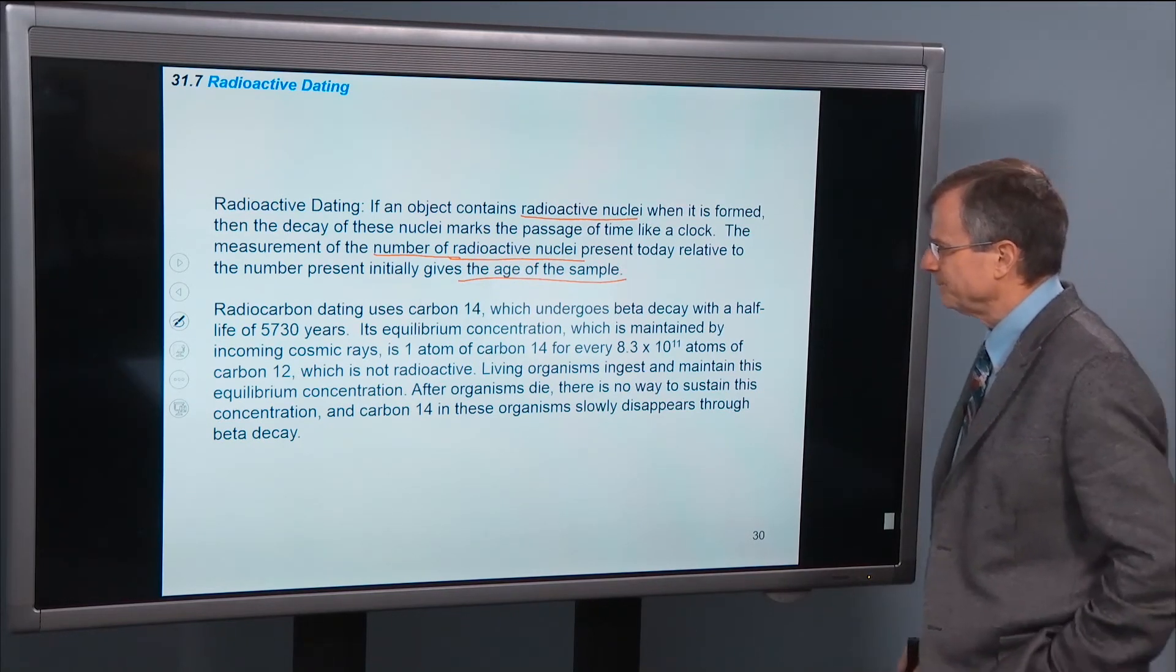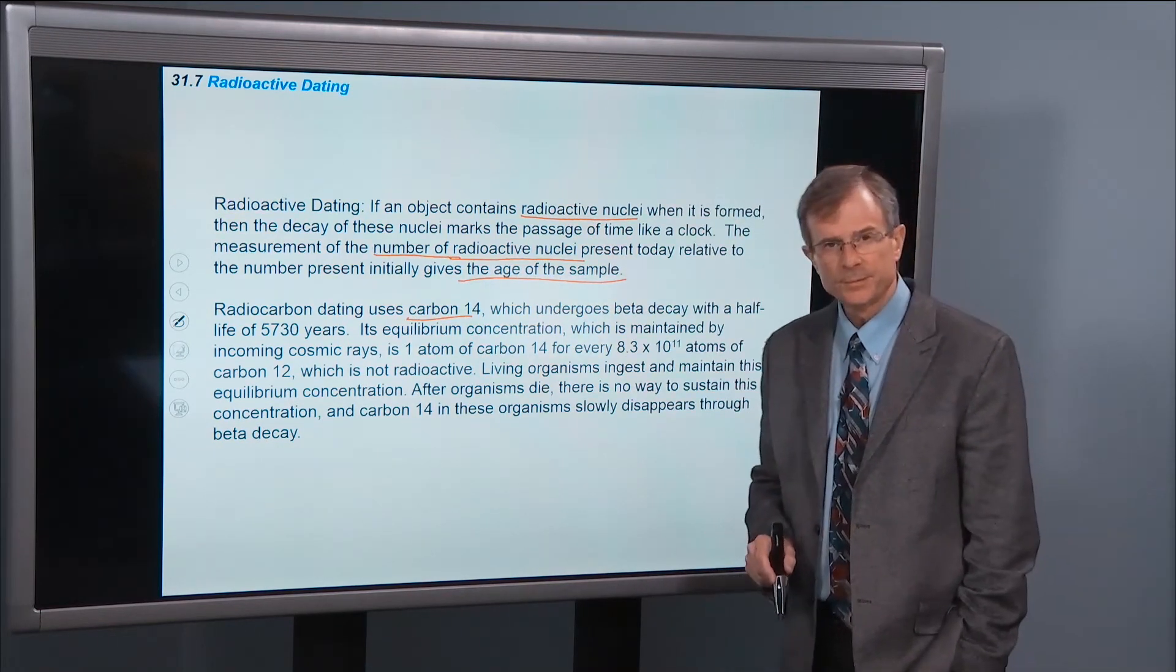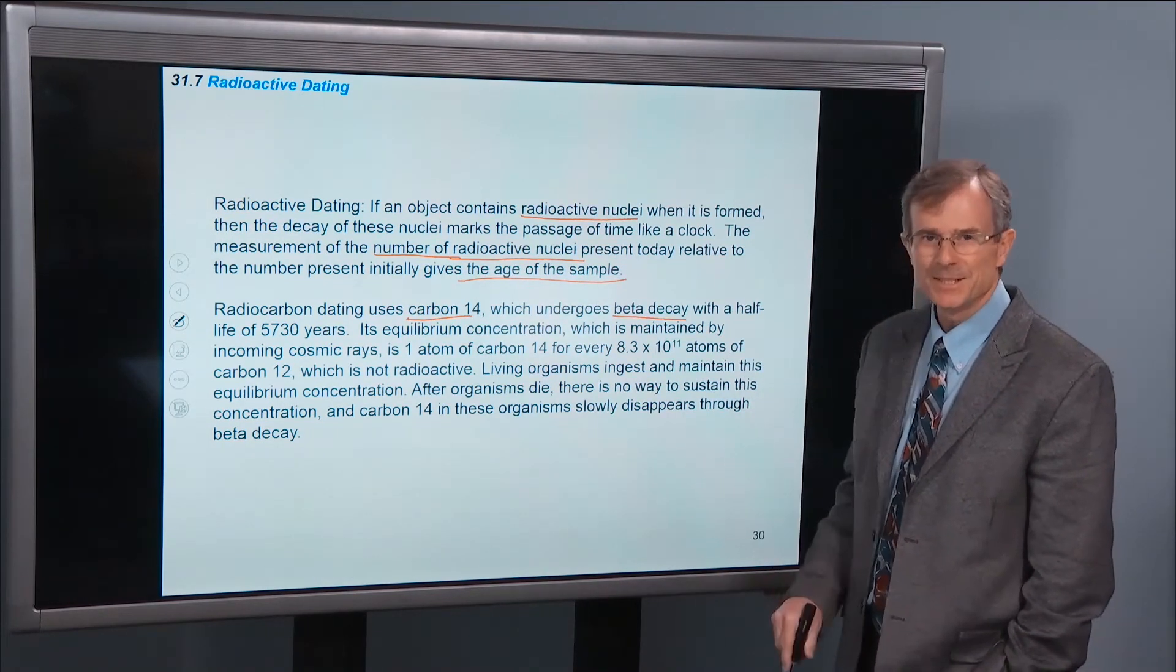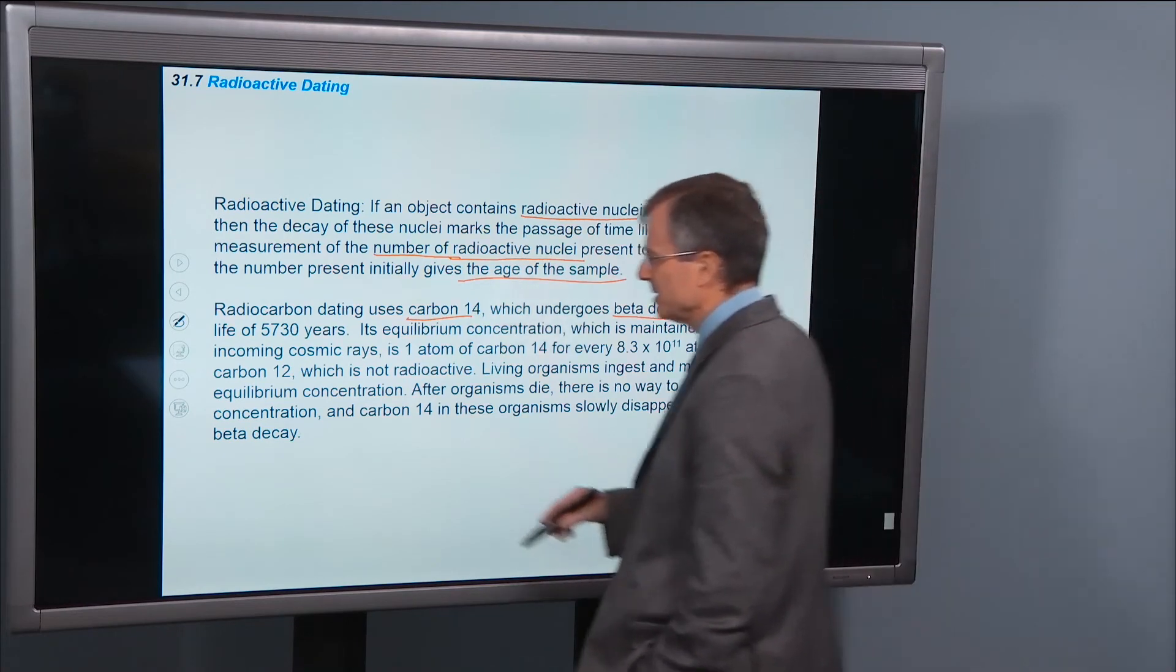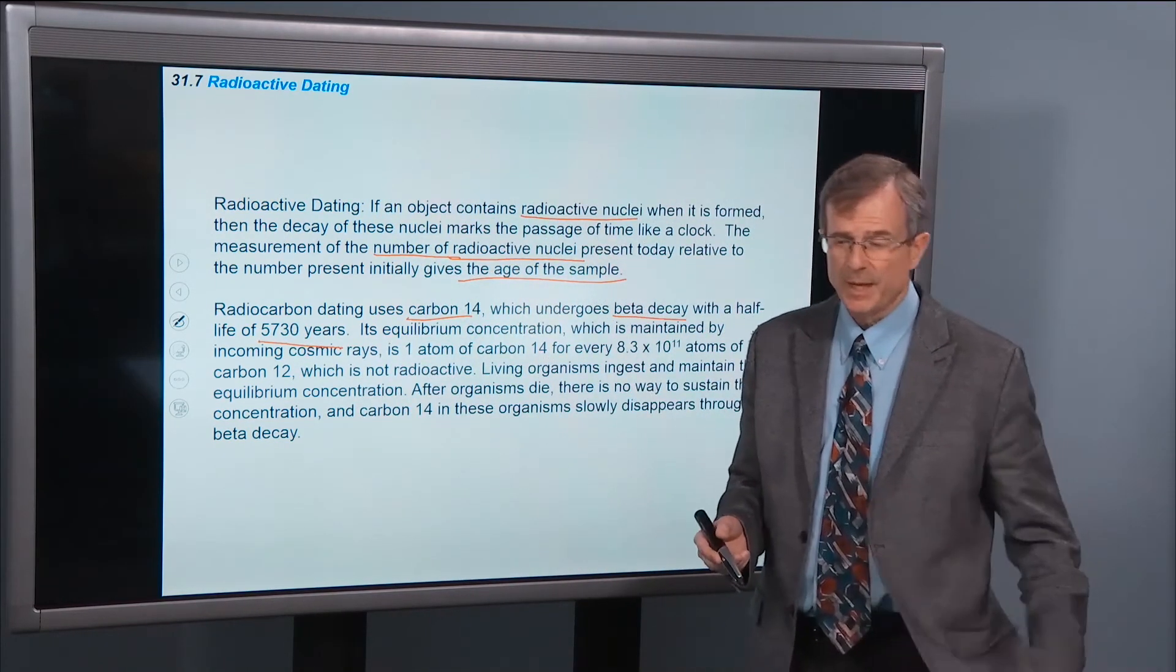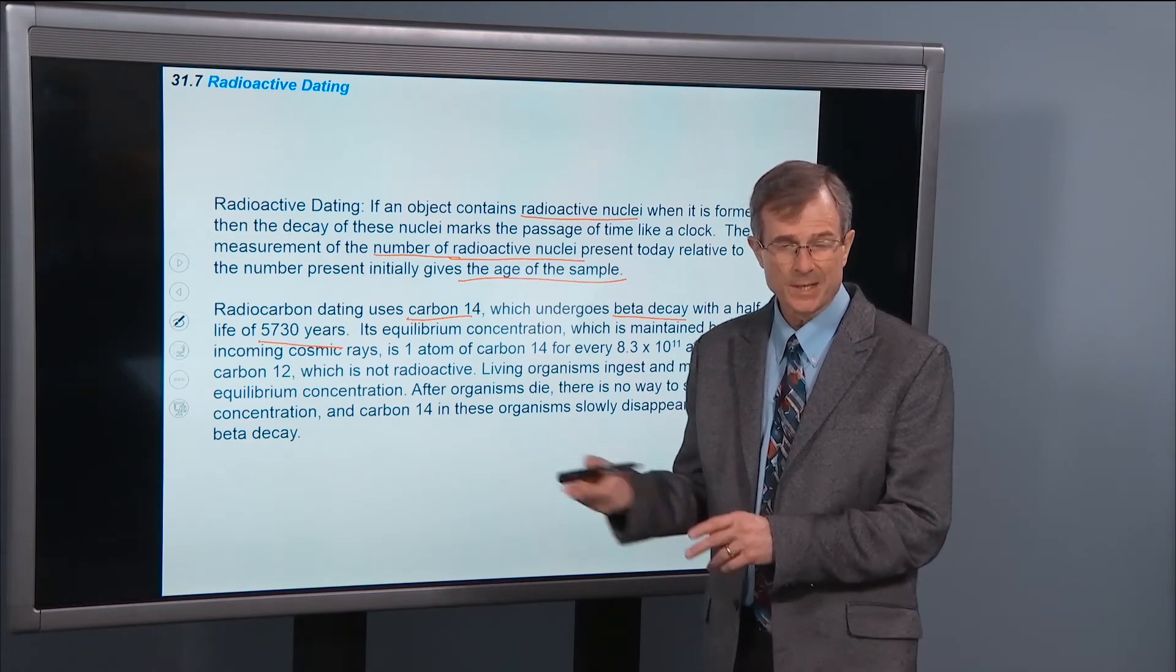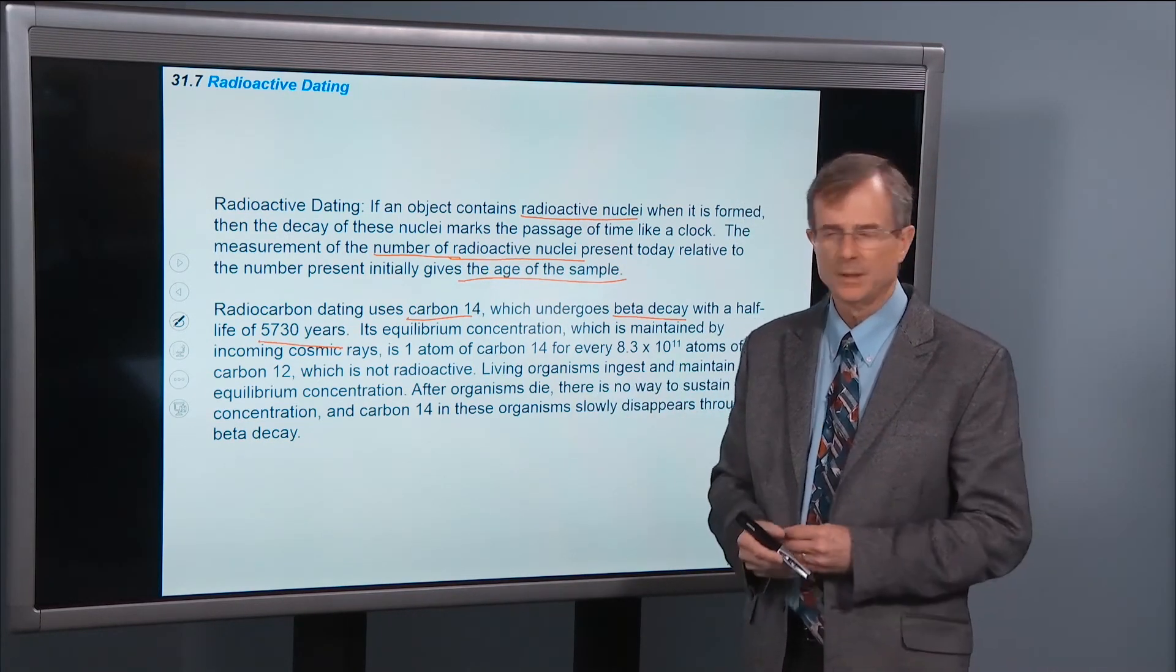Radiocarbon dating, it uses carbon-14. This is a radioactive nucleus that undergoes beta decay, beta meaning an electron gets ejected, with a half-life of 5,730 years. And this is nice. This is a great half-life. Number one, because carbon is abundant in our earth, and also about 6,000 years is a good time scale for things that happen on the earth.